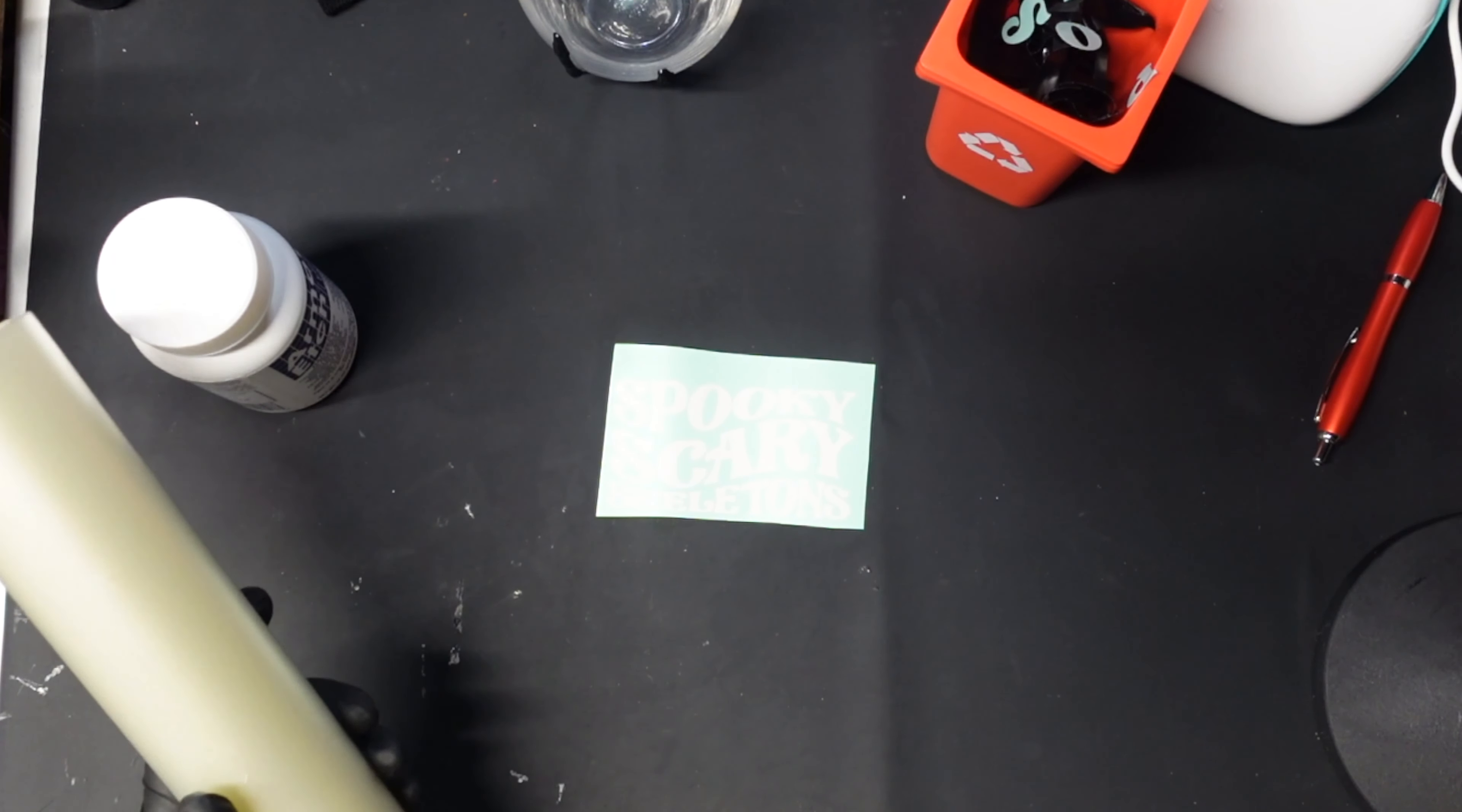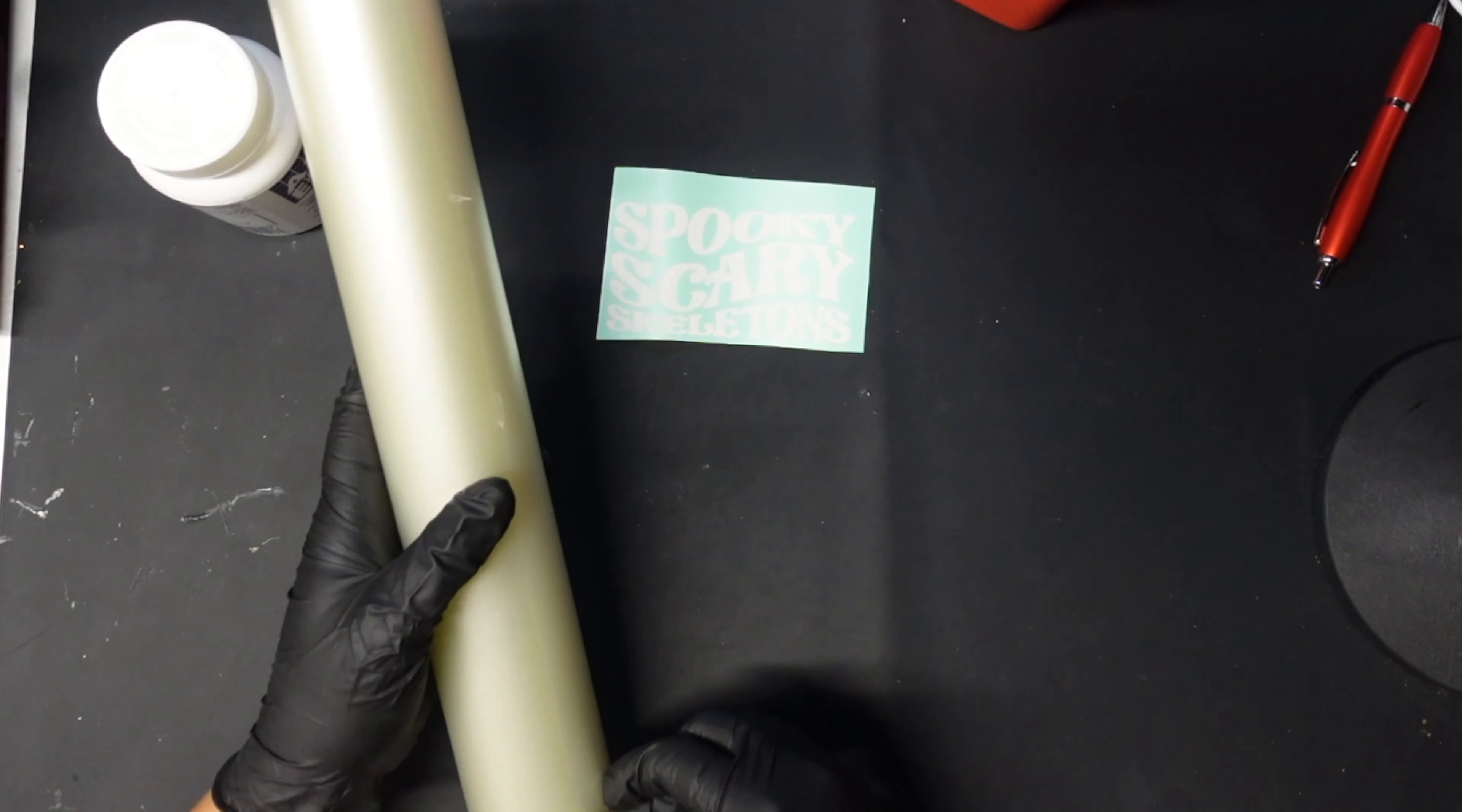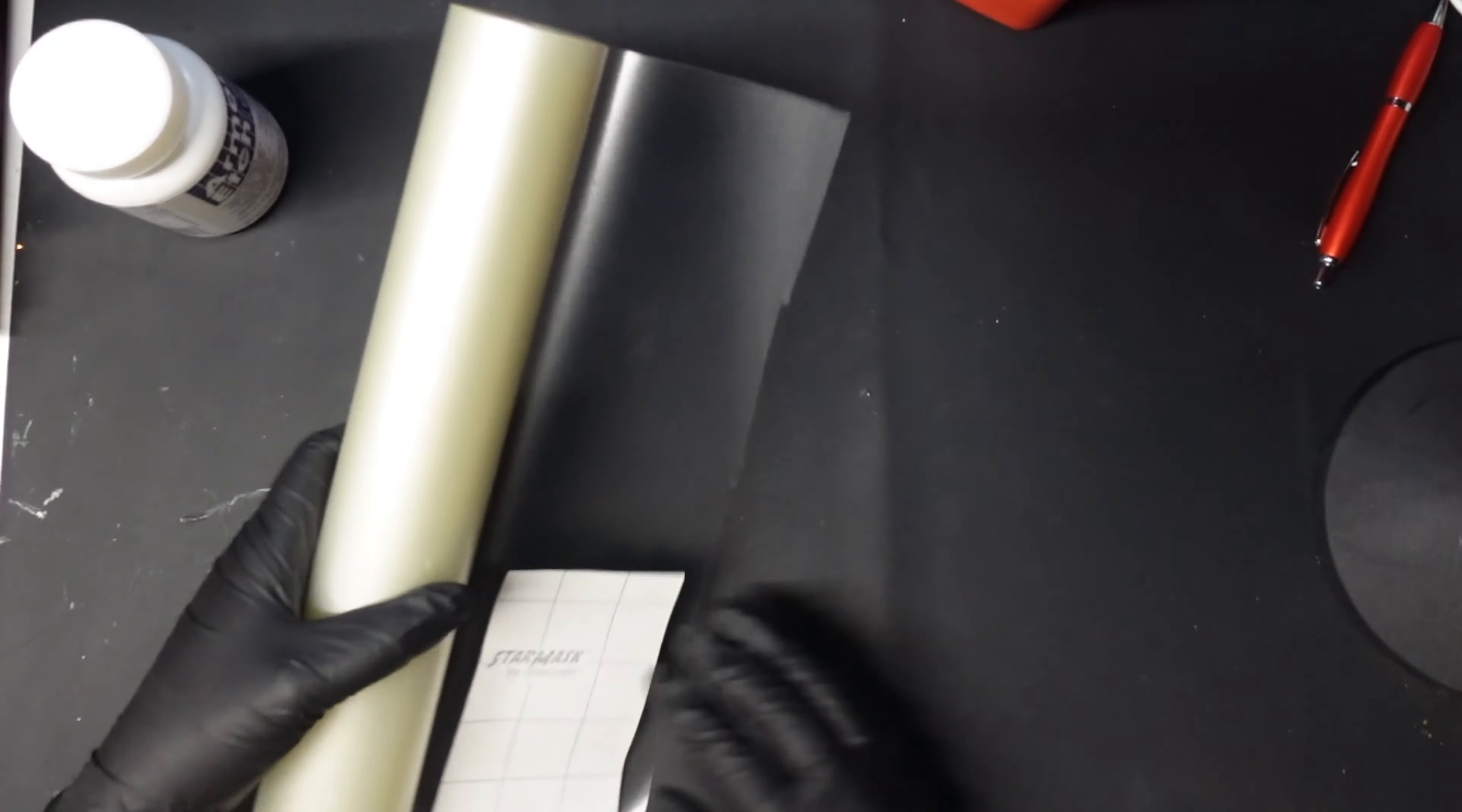So I am gonna take a bit of transfer tape since we do have some middle parts of letters. Just gonna roll some out and stick this down and then we could just cut that out. And so now we can put this on our cup and start doing the glass etching.